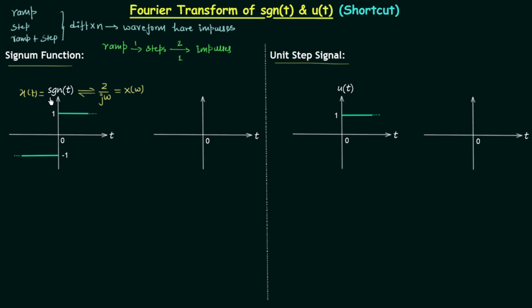I will now show how easily you can calculate the Fourier transform of the signum function using the differentiation method. We differentiate the signum function one time, because it is a combination of step signals. To obtain the derivative, we follow the flow of the signal from minus infinity. The signal is equal to minus 1, which is constant, so the slope is equal to 0. Therefore dx(t)/dt equals 0 from minus infinity to 0.